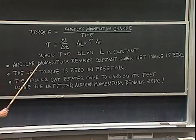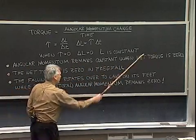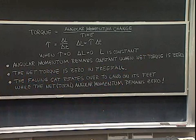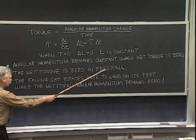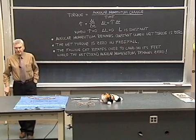Here I have a statement: the angular momentum remains constant when the net torque is equal to zero. Now it turns out that in free fall, for all objects, including falling cats, the net torque is zero during the entire time of free fall.